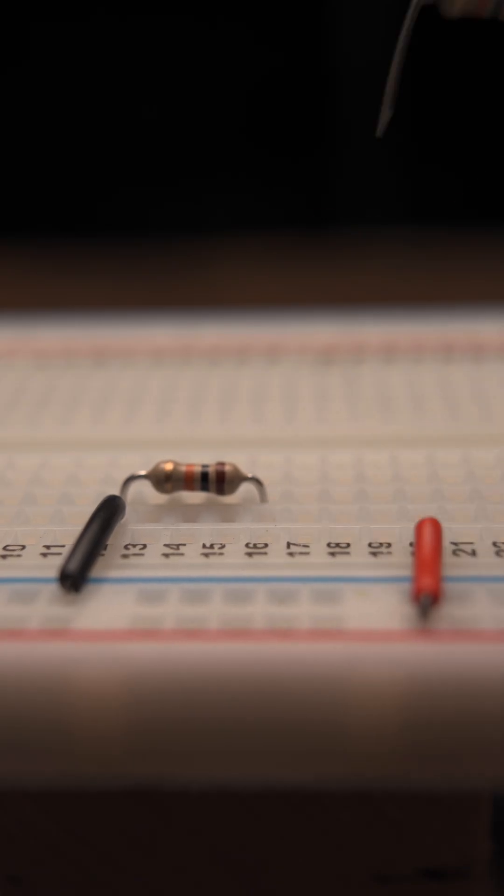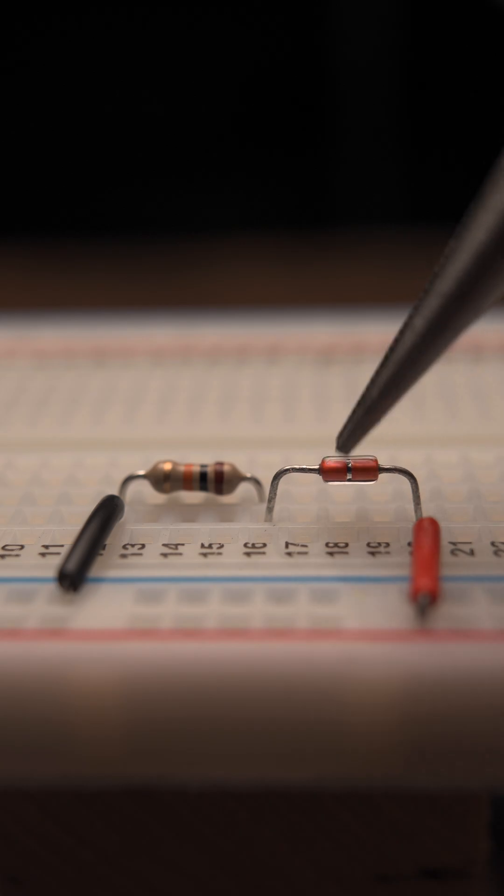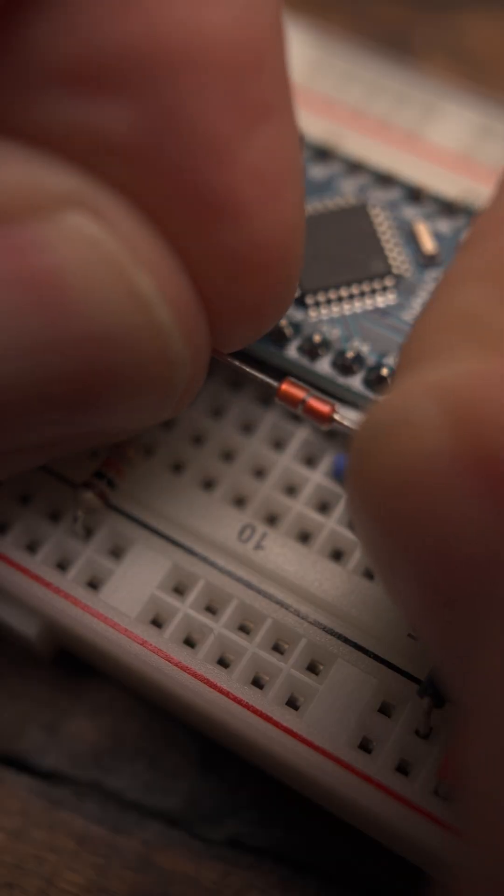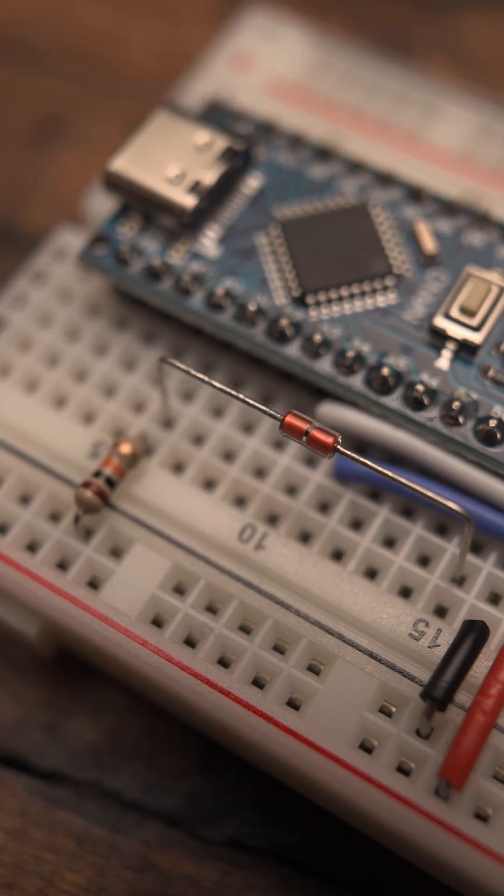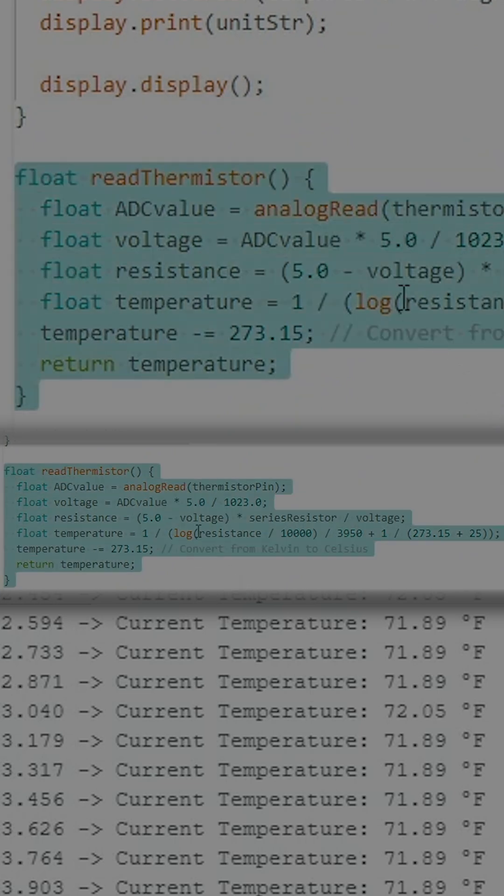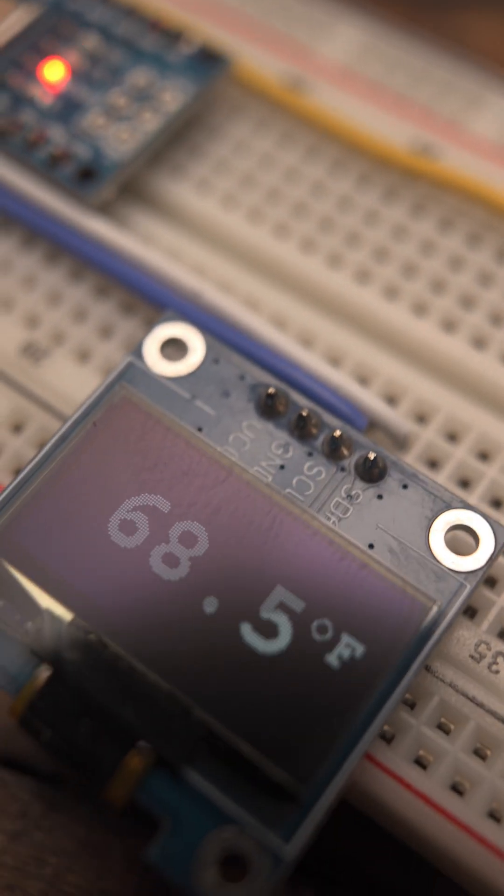Now if we replace one of those 10K resistors with a 10K thermistor, we will get a variable voltage depending on the temperature. If we connect this junction to a microcontroller's analog input, we can read this voltage and run a formula to convert that reading into a temperature. Then we send that reading to a display.